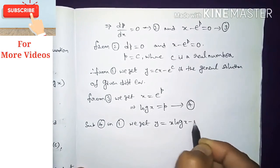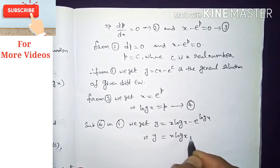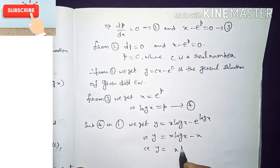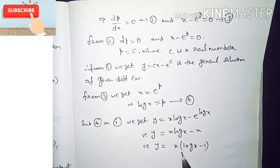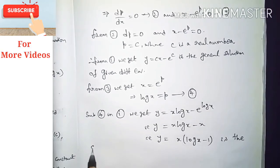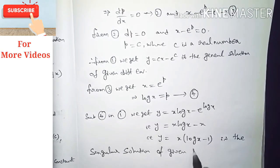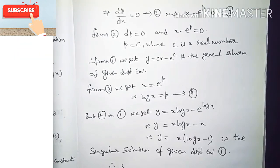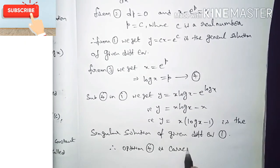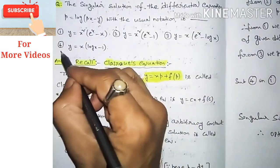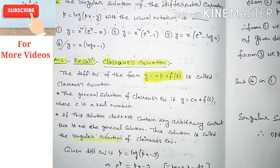Substituting equation four (p = log x) into equation one: y = x · log x − e^(log x) = x · log x − x = x(log x − 1). This does not contain any arbitrary constant, so y = x(log x − 1) is the singular solution of the given differential equation. Therefore option number four is correct. I hope you liked this video — please share, subscribe, and press the bell icon for more videos. Thanks for watching.